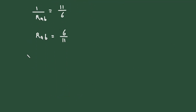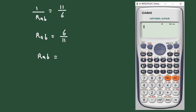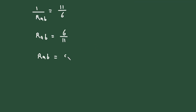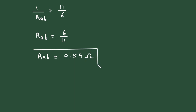Therefore RAB is equal to 6/11, which is 0.54 ohms. This is how we can find equivalent resistance.